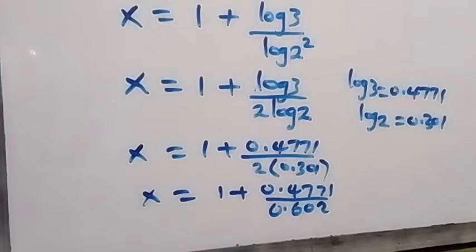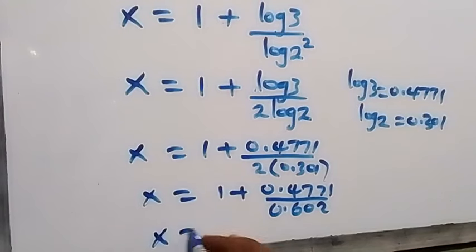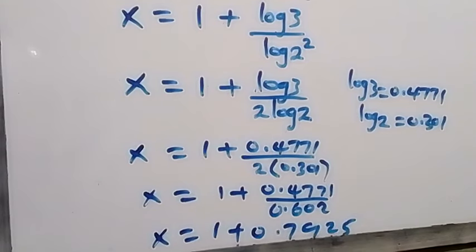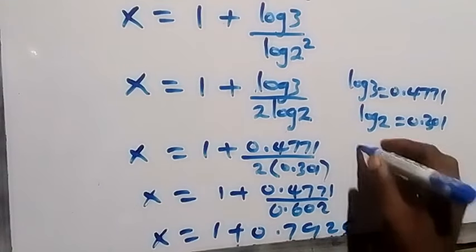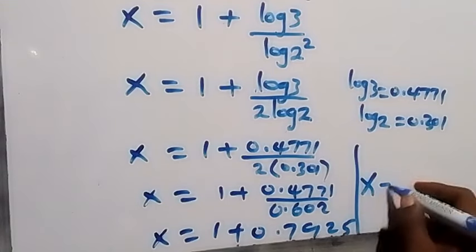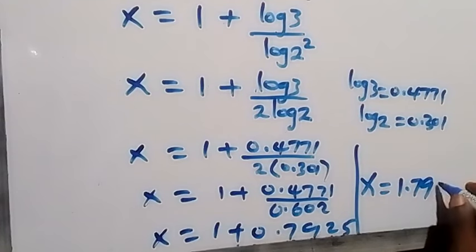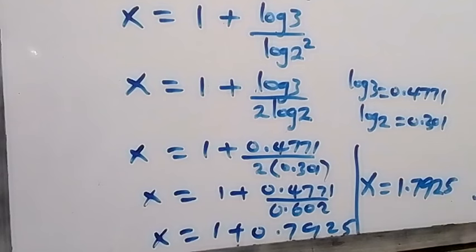This multiply becomes 0.602, then here gives us x equals 1 plus 0.7925. When we add this, x is now equals to 1.7925. So we have here the value of x in this problem.